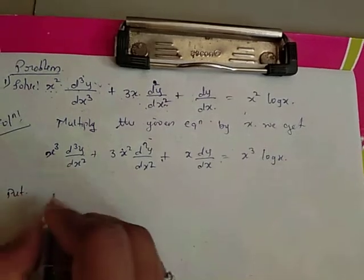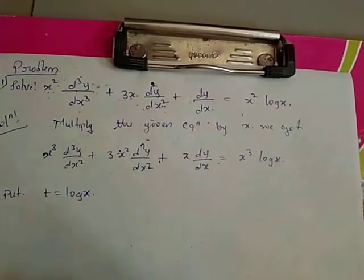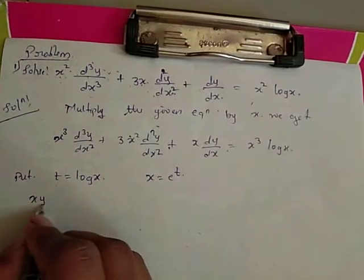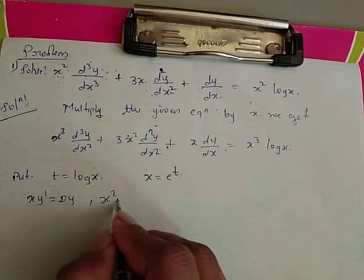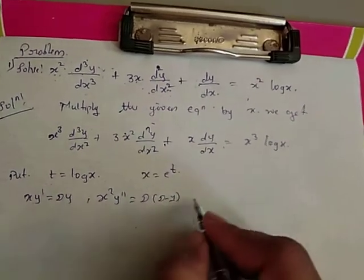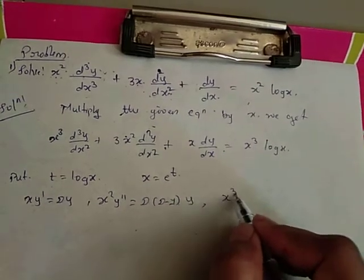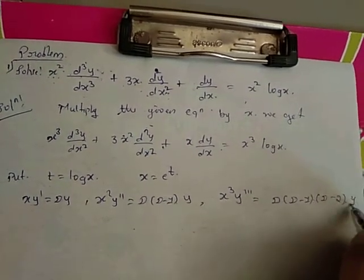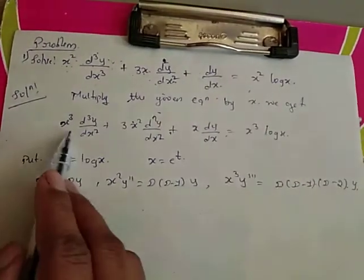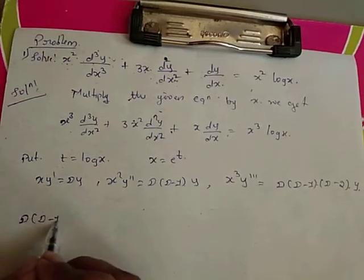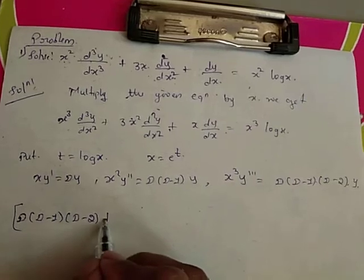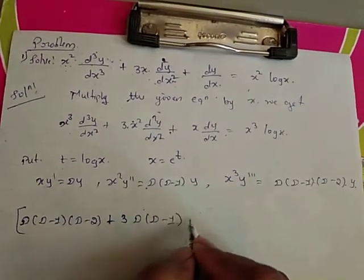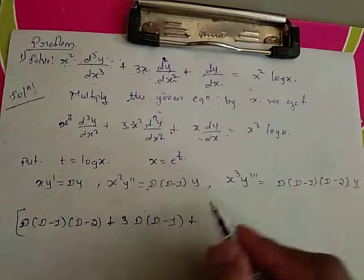Now put the substitution: T = log X, X = e^T. Then: X·Y' = DY, X²·Y'' = D(D−1)·Y, and X³·Y''' = D(D−1)(D−2)·Y. Substituting into the equation: D(D−1)(D−2)·Y + 3·D(D−1)·Y + D·Y = e^{3T}·T.